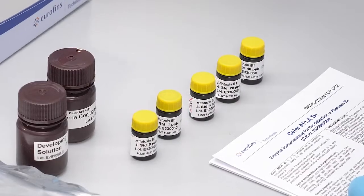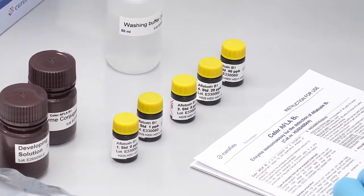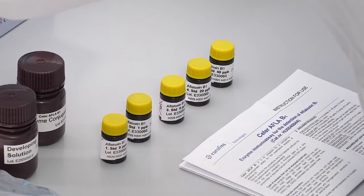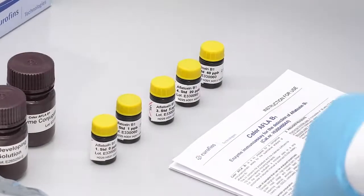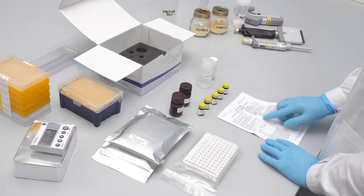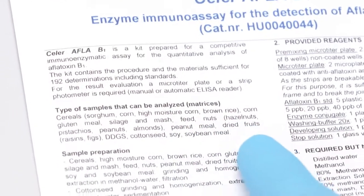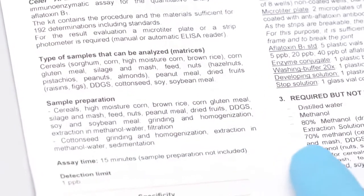The curve range goes from 1 to 40 ppb and can be extended to 200 ppb by sample dilution. The kit uses an antibody with high specificity for Aflatoxin B1. The kit belongs to the Cellar line of ELISA test kits for mycotoxins.